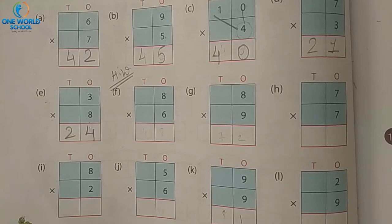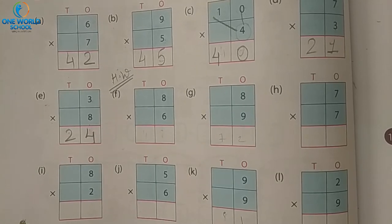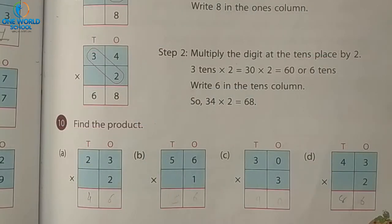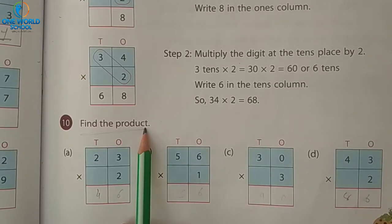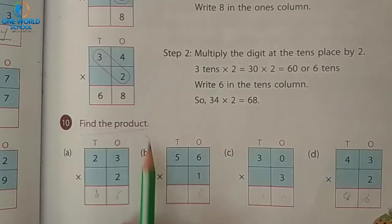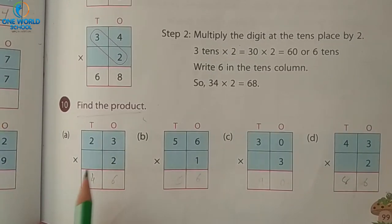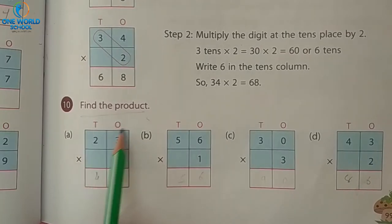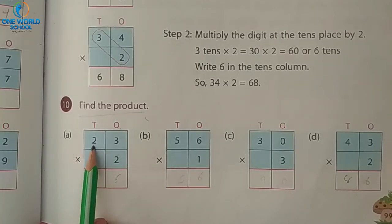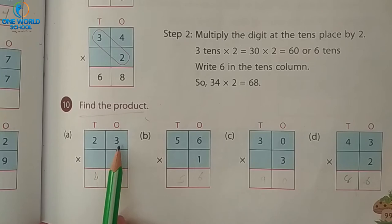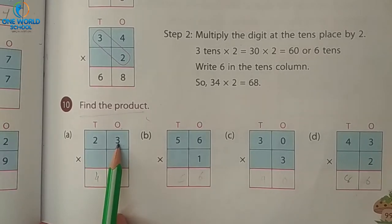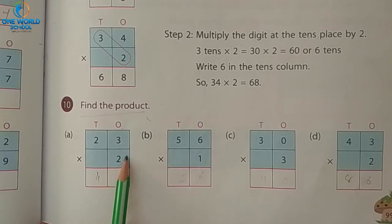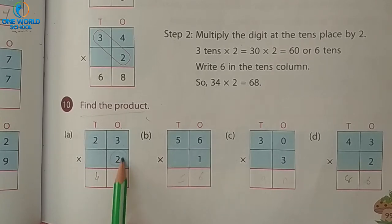Now take the next page — page number ninety-nine, exercise number ten. What we have to do here? We have to find the product — multiplication. In the last exercise there was only one digit at the ones place, but now it is a two-digit number: twenty-three. How many digits are there? Two digits. And your second number is of one digit.